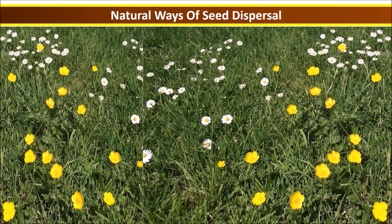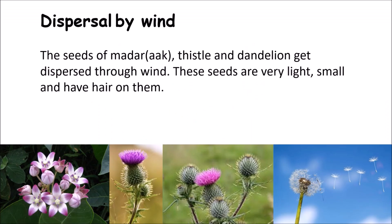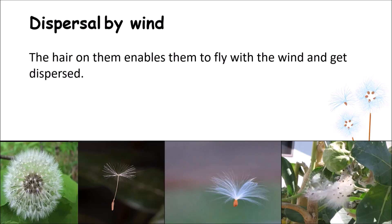The first method is dispersal by wind. The seeds of Madar, Aak, Thistle and Dandelion get dispersed through wind. These seeds are very light, small and have hair on them. The hair enables them to fly with the wind and get dispersed.